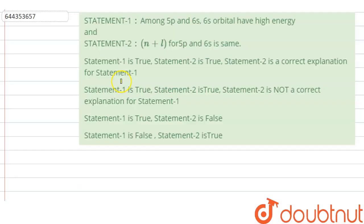Hello everyone, let us solve this question. The question says that statement 1: among 5p and 6s, 6s orbital has high energy. And statement 2: n plus l for 5p and 6s is same.